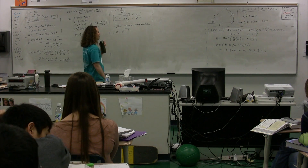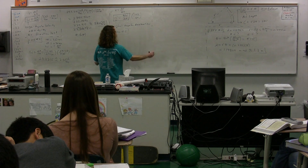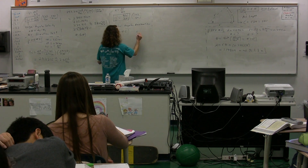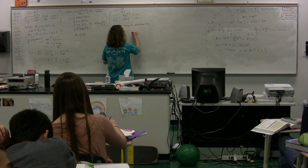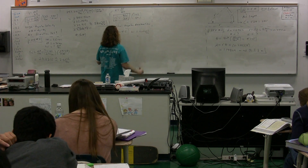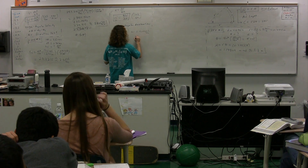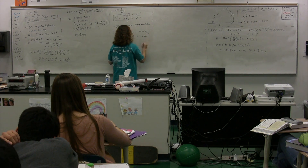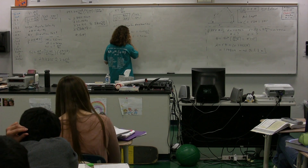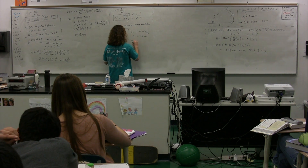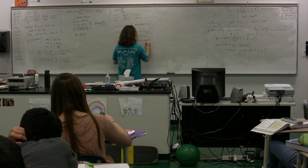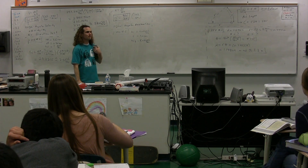A figure skater begins spinning counterclockwise at an angular speed of 4.0 pi radians per second — omega equals 4.0 pi radians per second. During a 3.0 second interval — time equals 3 seconds — she slowly pulls her arms inward and finally spins at 8.0 pi radians per second — omega final equals 8.0 pi radians per second.